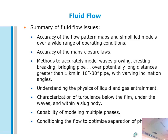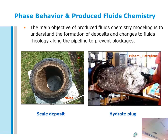Here's a summary of those fluid issues: a lot of scales, closure laws, turbulence modeling, multi-phase flows, etc. That's just one complicating part. Now let's add fluid chemistry to the mix. The main objective of produced fluids chemistry modeling is to understand the formation of deposits and changes to fluid rheology along the pipeline. What we really want to do is prevent blockages. A better approach is if we understood how these formed and evolved through the pipeline — could we actually manage the flow of those solids?